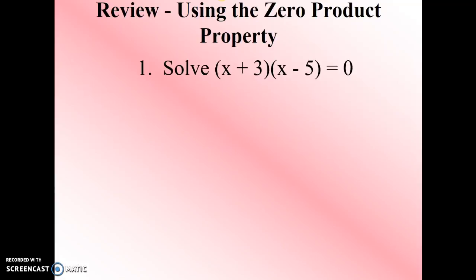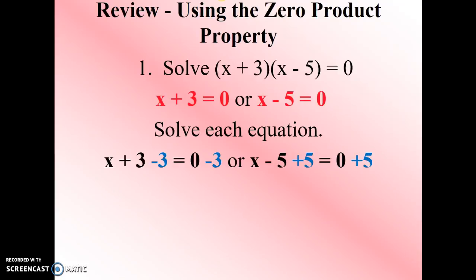So let's begin first with a review of using the zero product property. Here we have an example where we're asked to solve x plus 3 times x minus 5 equals 0. Using the zero product property, we know that either x plus 3 equals 0 or x minus 5 equals 0. Now we want to solve each equation. We'll subtract 3 from both sides on the left-hand equation and add 5 to both sides on the right-hand equation. We find x equals negative 3 or x equals 5. So our solution set is negative 3 or 5.